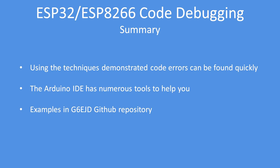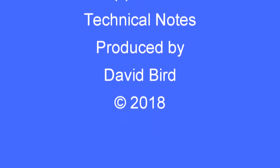Debugging your code can be quite simple. Using a variety of techniques — either a very simple approach or some more advanced approaches — it should enable you to get to the problem area very quickly as you follow the program flow. You can use those tools to help home in on the problem area. I've put two examples in my GitHub repository, and I hope you enjoy using them and they speed up your error detecting and correcting. I hope you found this technical note interesting and useful.